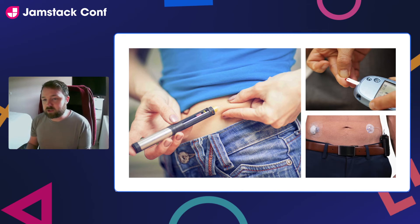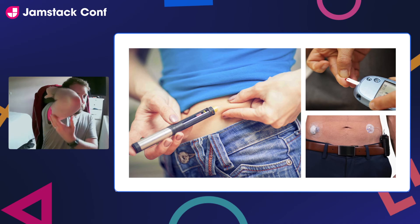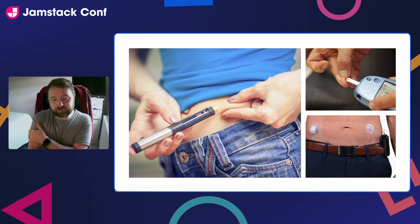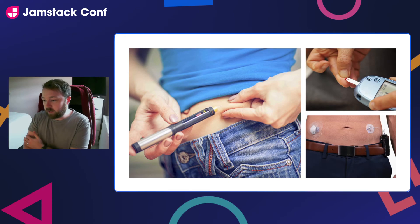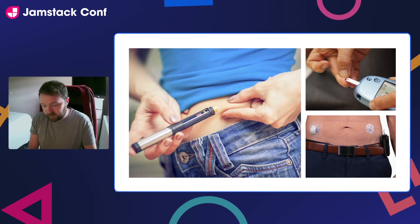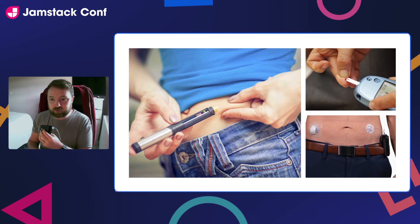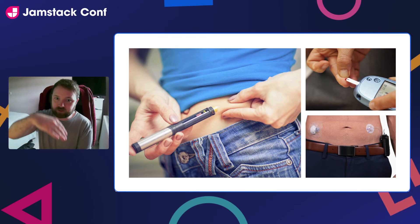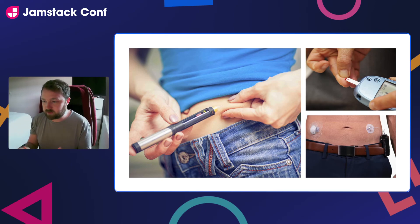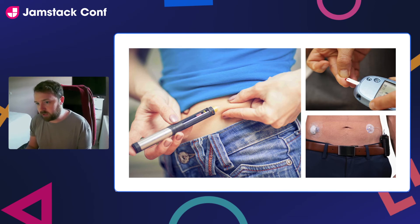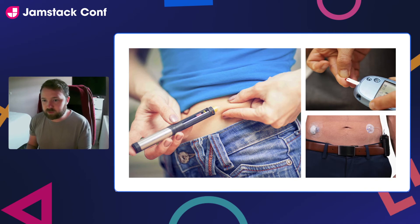This person also has something called a continuous glucose monitor. I have a lot of pink tape here to keep it in place, but I have one as well. What this machine does is continuously check my blood sugar levels and send the data over to the insulin pump via Bluetooth. The machine is then capable of taking those results and adjusting my insulin levels accordingly in the background.